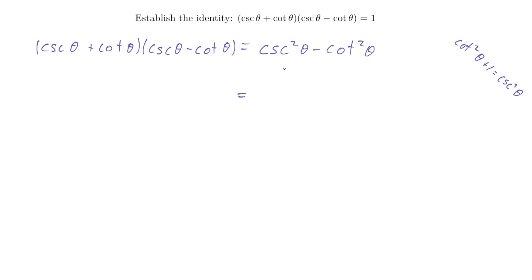So cosecant squared theta, cosecant is 1 over sine theta. So this is 1 over sine squared theta minus cotangent theta is, let's see, cotangent is cosine over sine, so this would be cosine squared theta over sine squared theta.